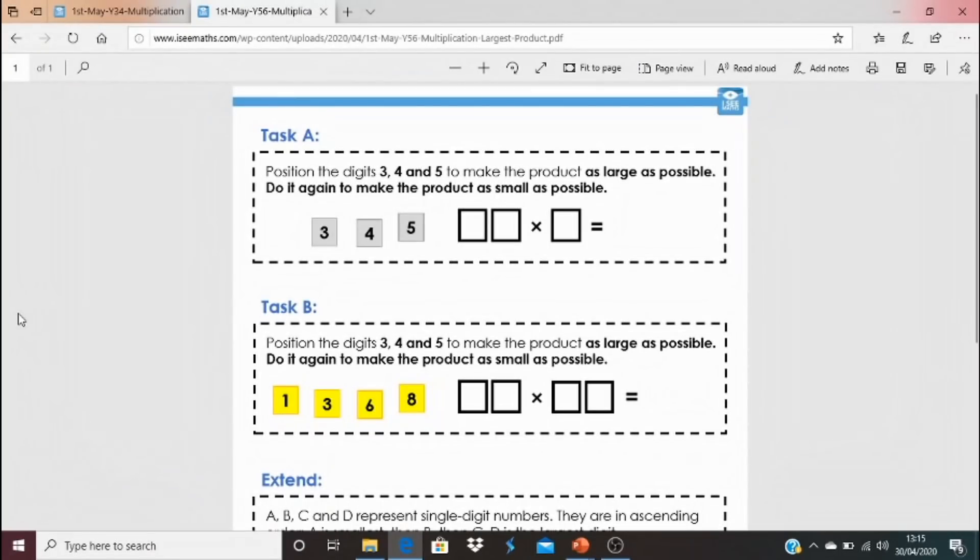Here are today's tasks. To find this, click on the blue link underneath this video. It'll bring open task A, task B and the extend task. For task A, position the digits 3, 4 and 5 to make the product as large as possible. And then do it again to make the product as small as possible. See how you can apply what we've learned to do that, what the kind of rules are to make the product as large or as small.